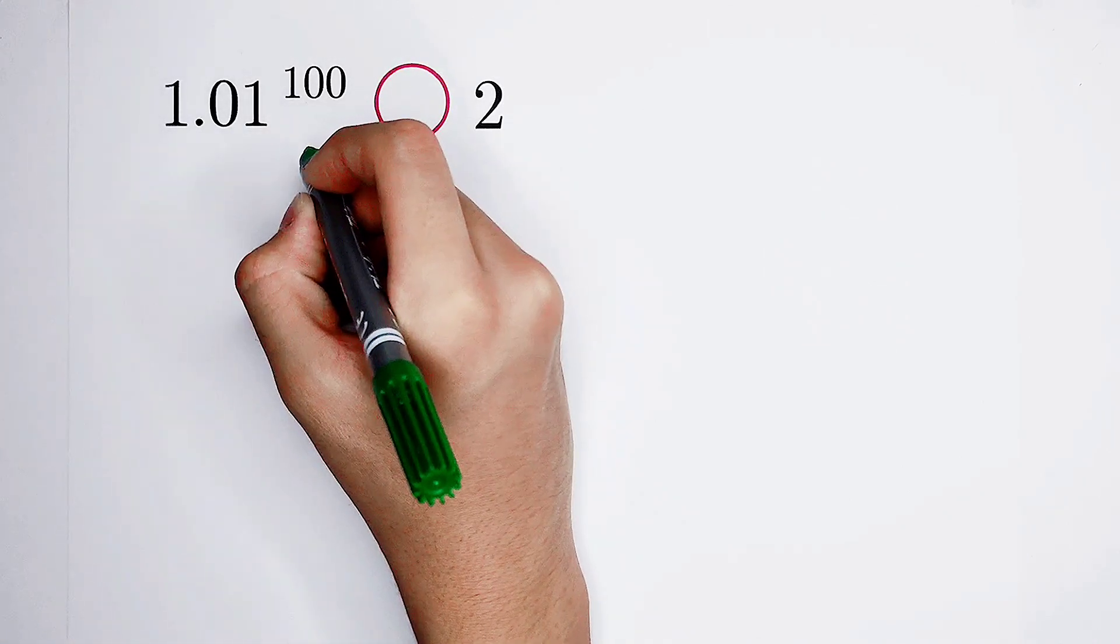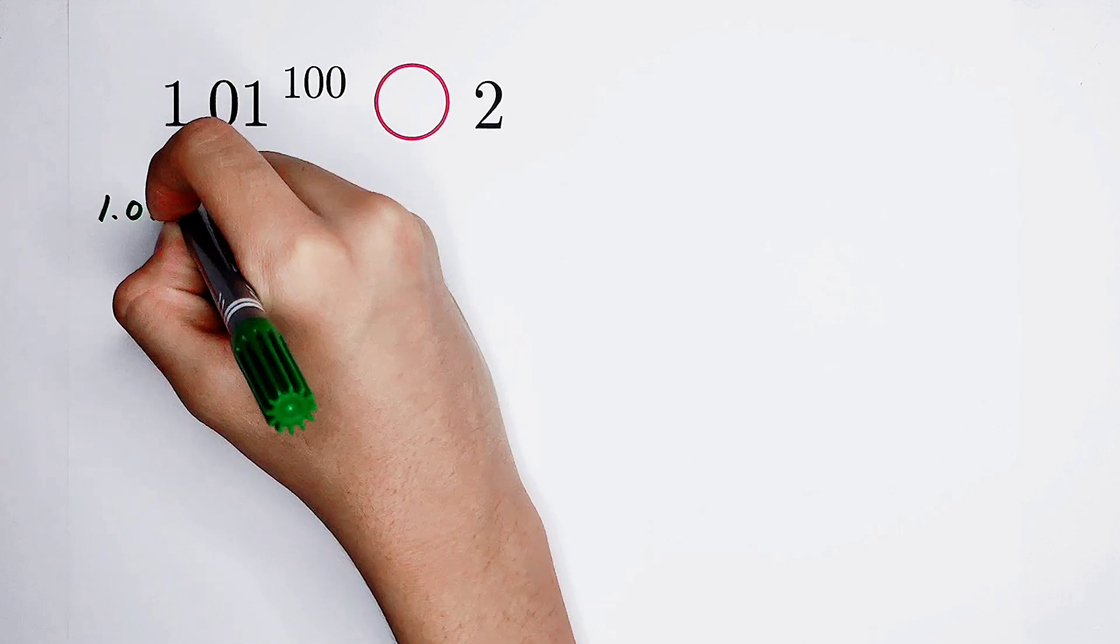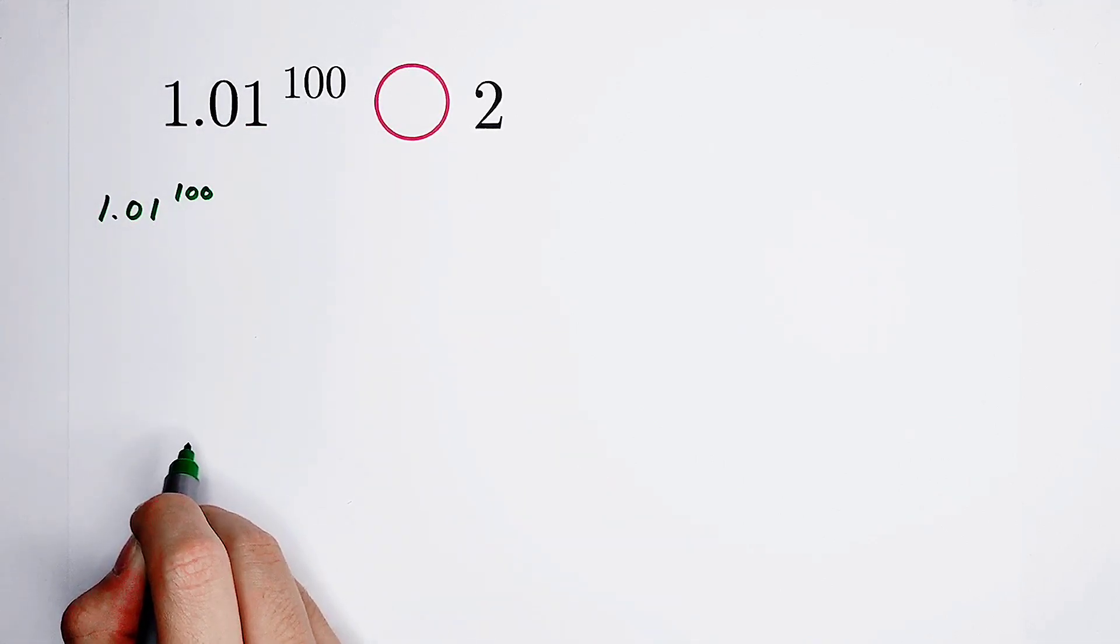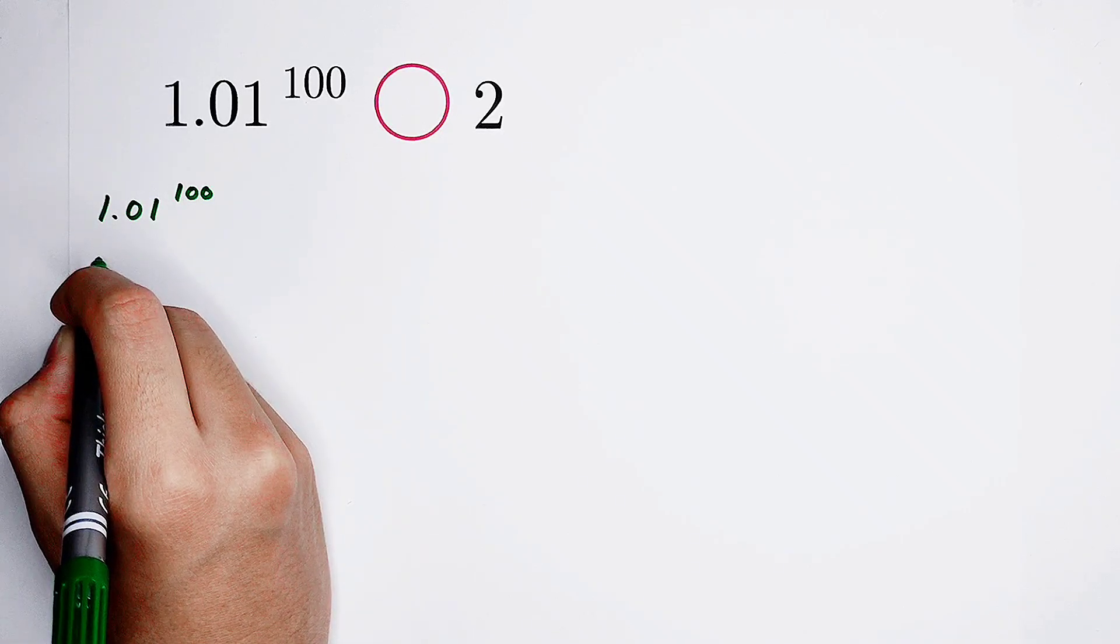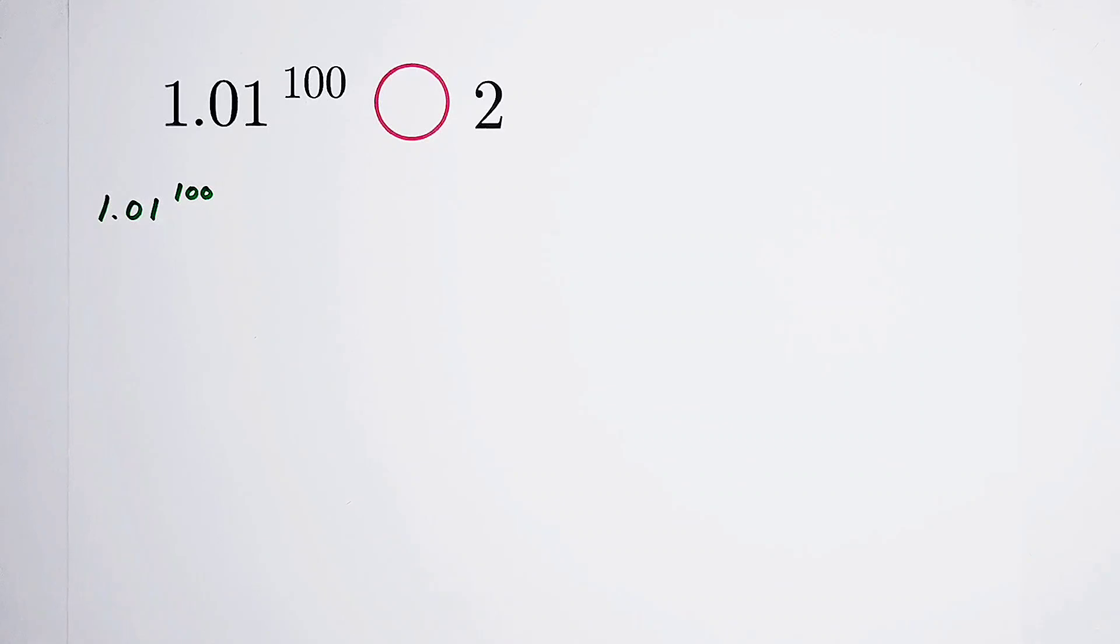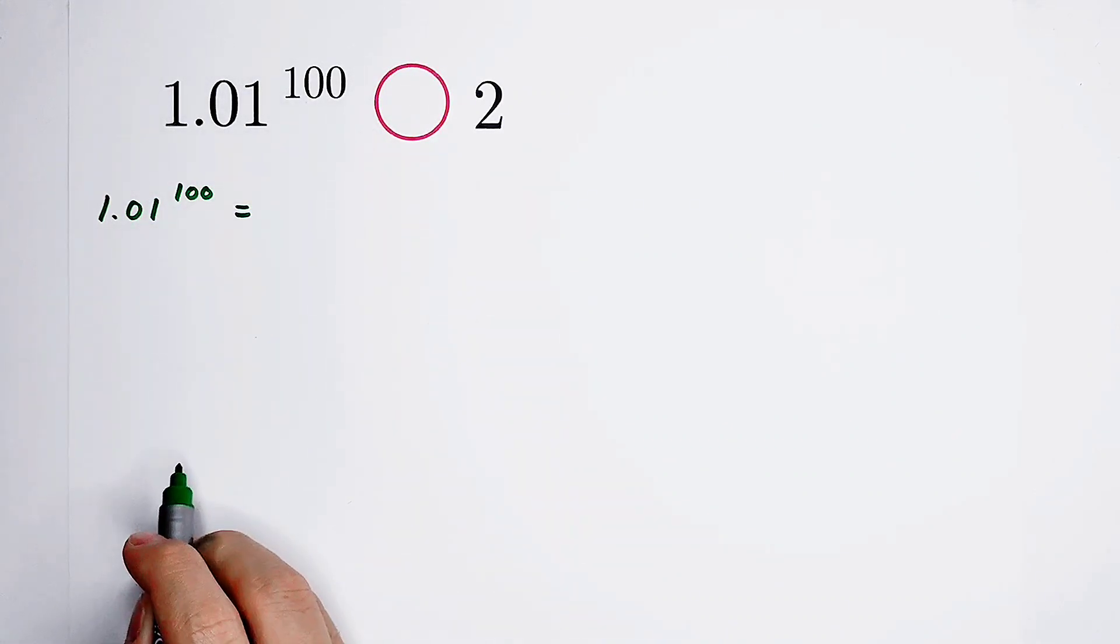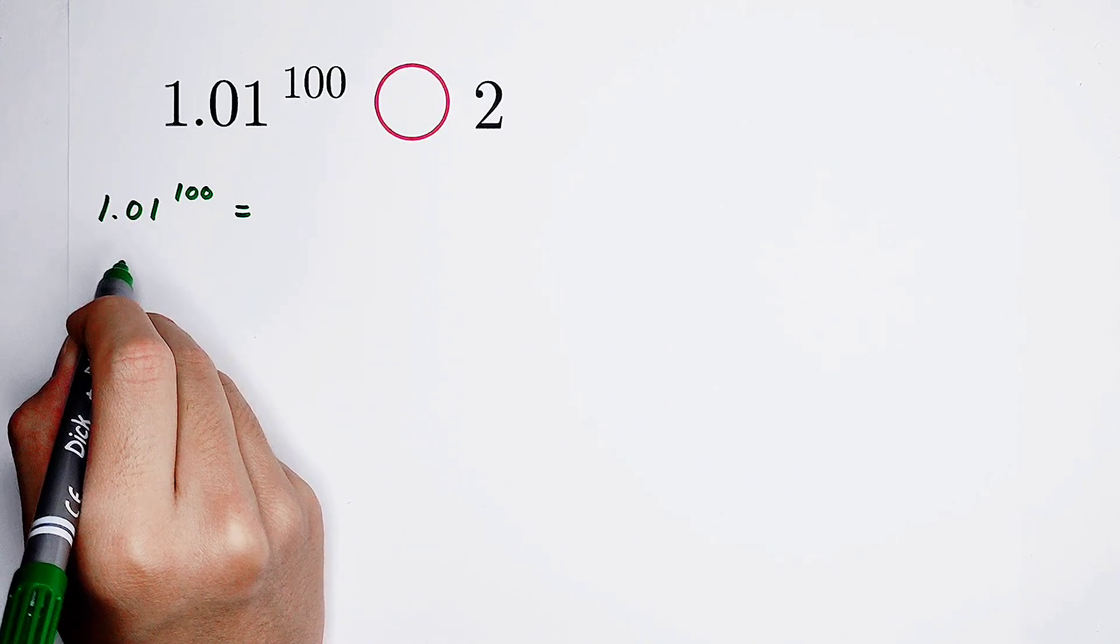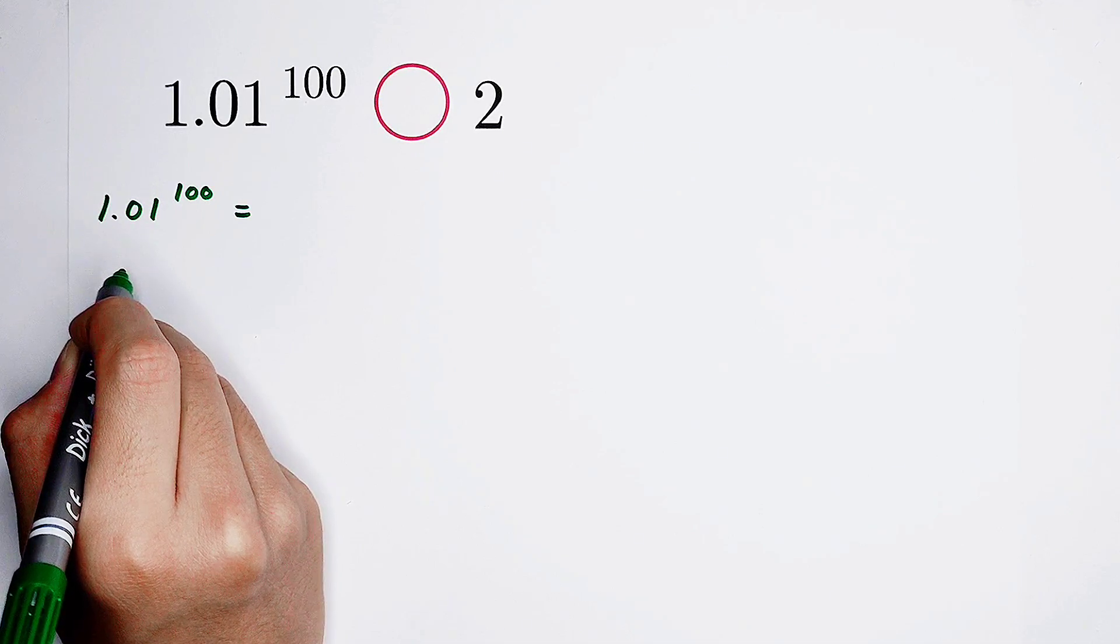Now, the left-hand side, 1.01 to the power of 100. There appears a decimal point. We always hate decimal points. So what I like to do is to transform the base. A decimal form, we can transform it into a fractional form.